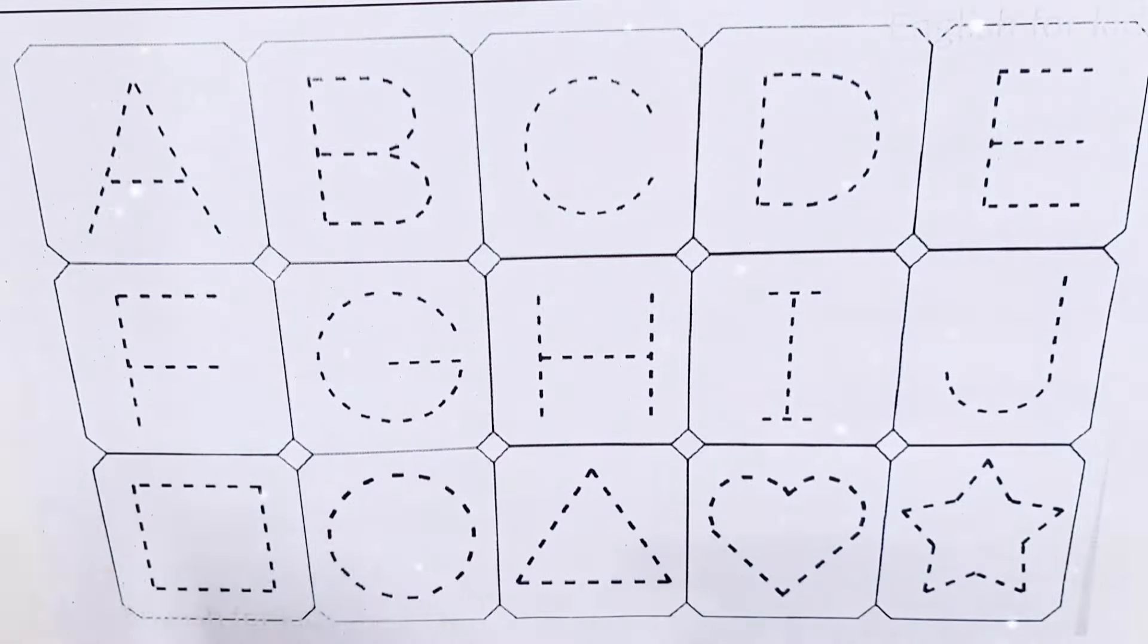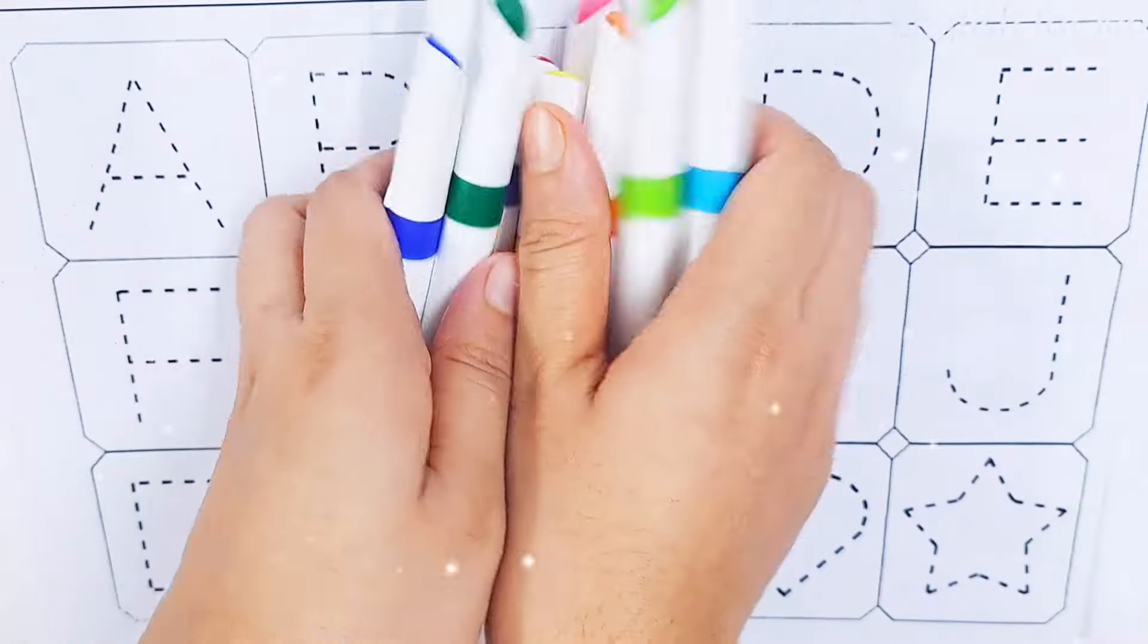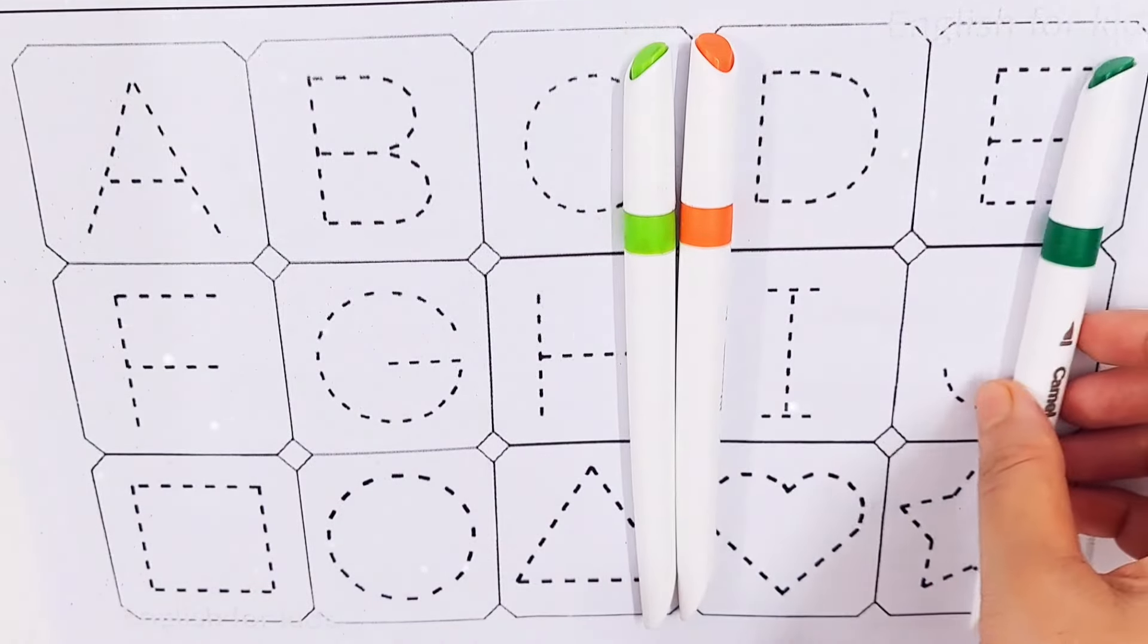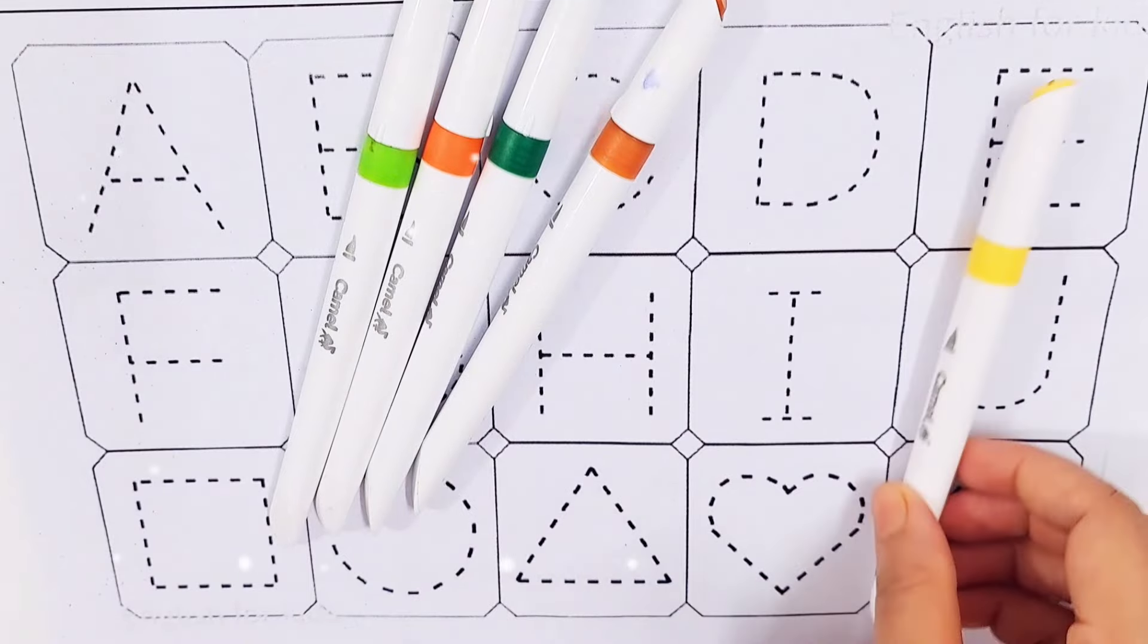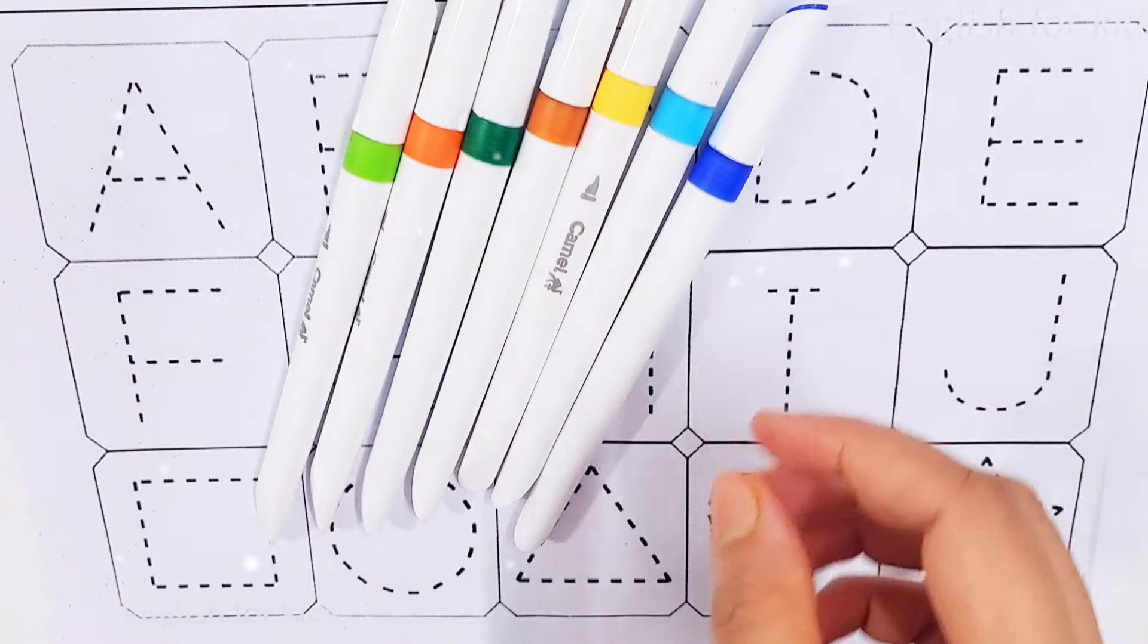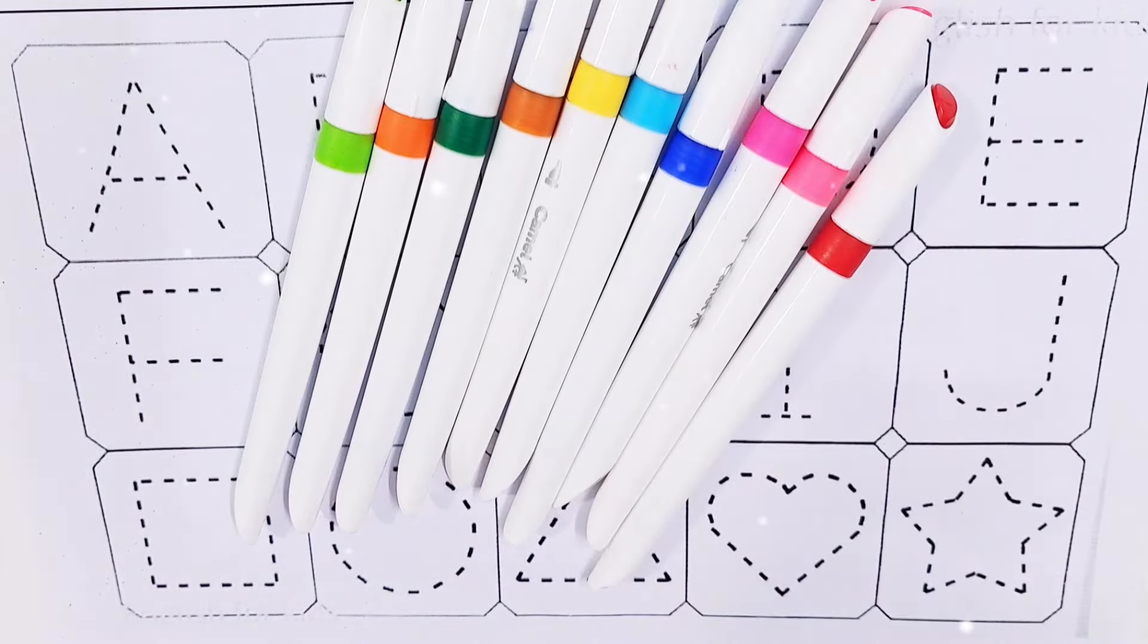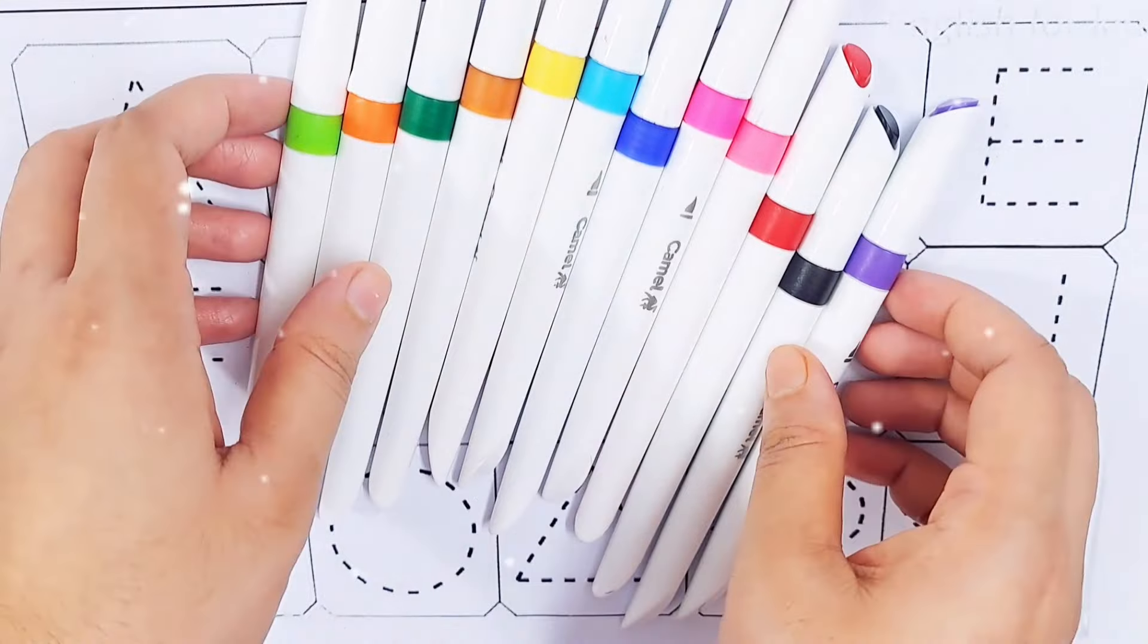Hello kids, let's learn some colors. Light green color, orange color, dark green color, brown color, yellow color, sky blue color, dark blue color, purple color, pink color, red color, black color, violet color.